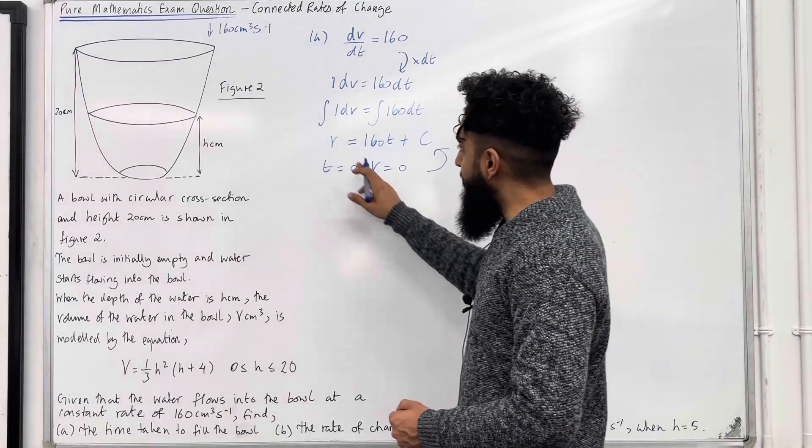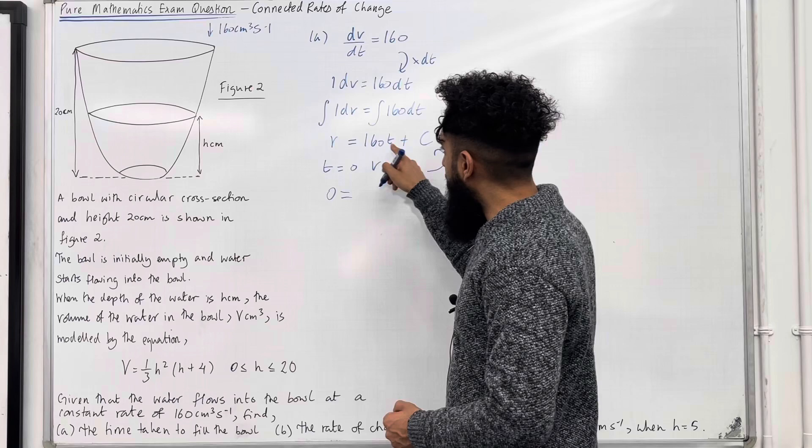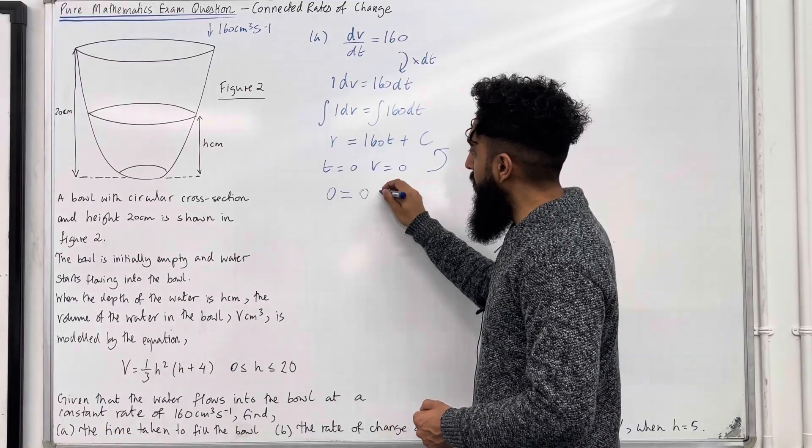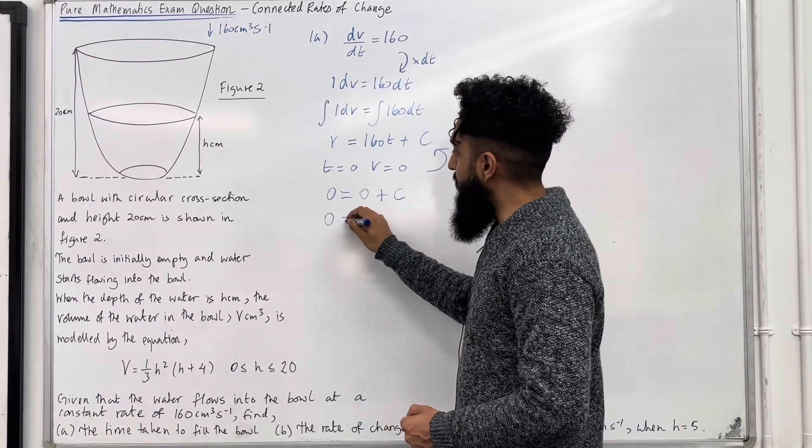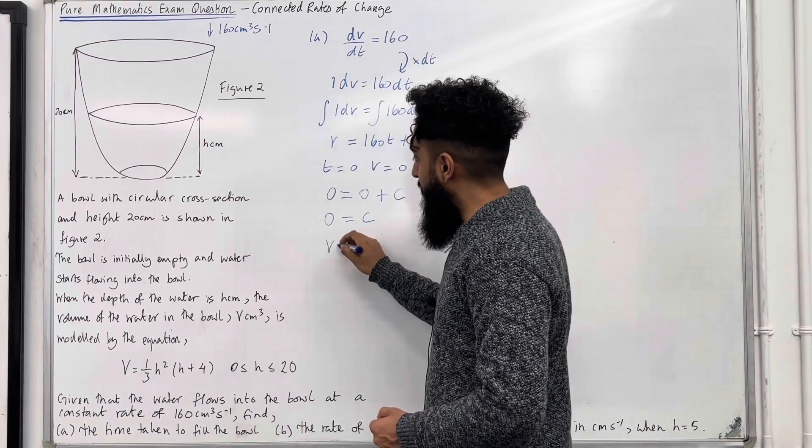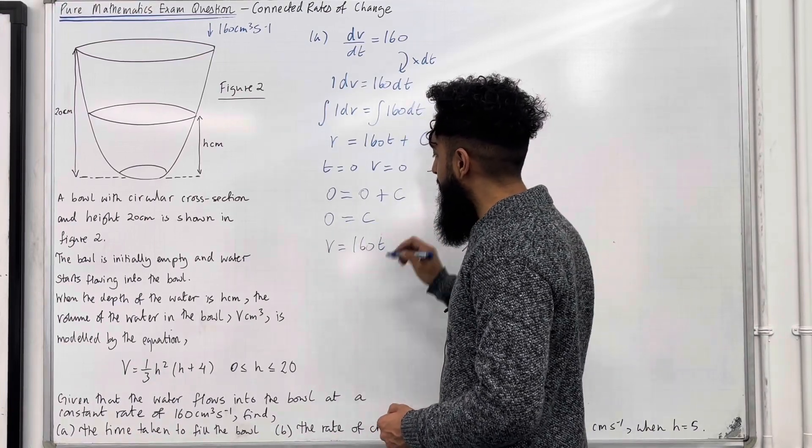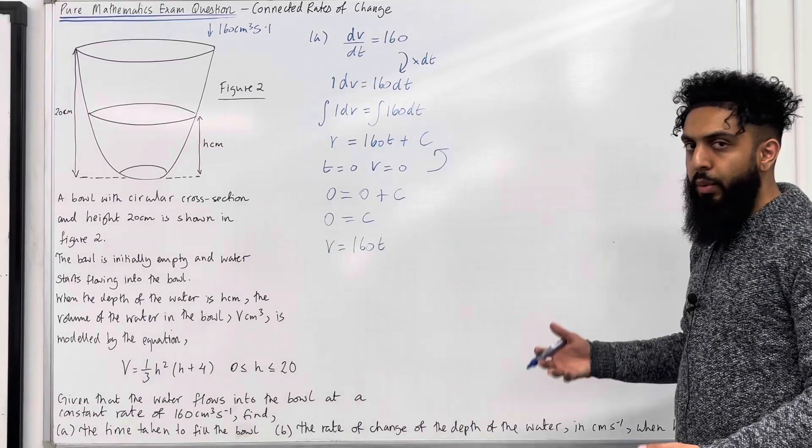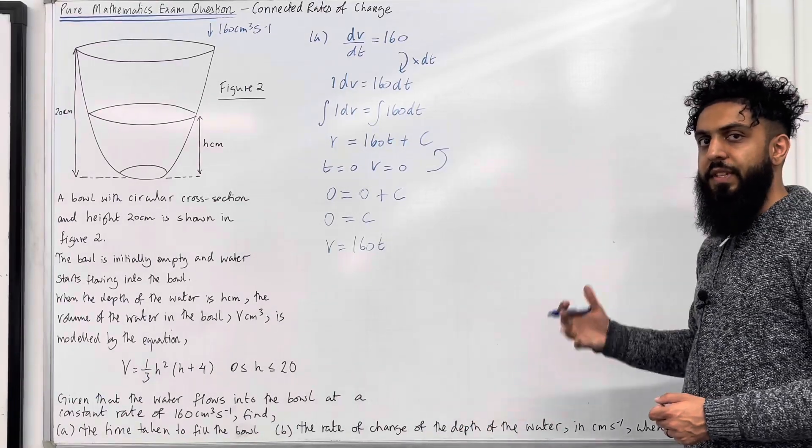If we do this, we get 0 is equal 160 times 0, which is 0, plus c. Hence, 0 is equal c. Now, we can substitute this constant back into this formula. This gives us v equal 160t. So, we've got a formula for the volume v in terms of the time t.